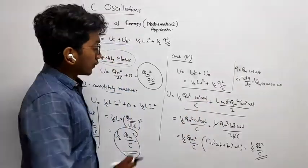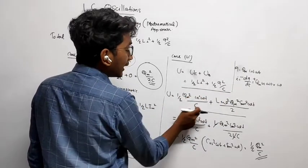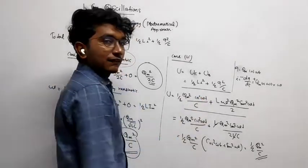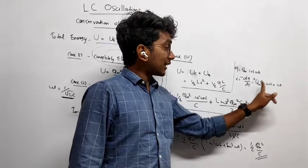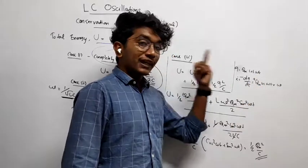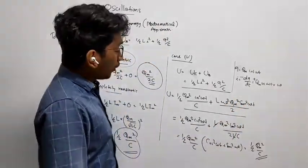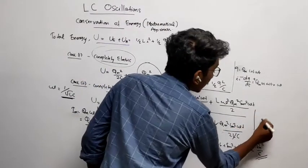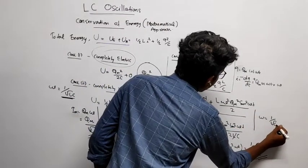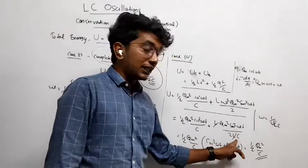Substitute both the values. So I will be half into Qm squared, cosine squared omega t divided by C plus L into omega squared. Omega is there, omega is there, that is omega squared. Omega squared, Qm squared, sine squared omega t by 2. Now substitute the value of omega. Omega is equal to one by root LC. How much is omega squared? One by LC. So one by LC will be here.